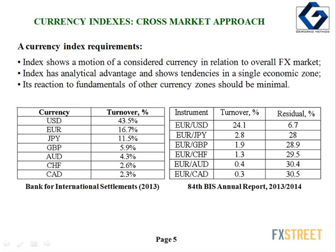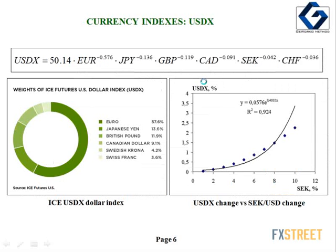According to data from the Bank for International Settlements, the monthly turnover of central banks has shown seven currency leaders, which you can see on screen. Let's move on to our basic question: the algorithm of index composition. The first way is the traditional USD index, which is traded on ICE. However, the problem is that this index has a non-linear structure.